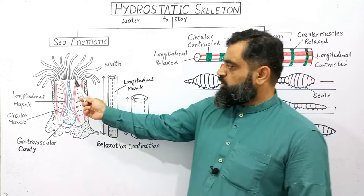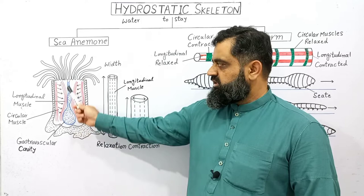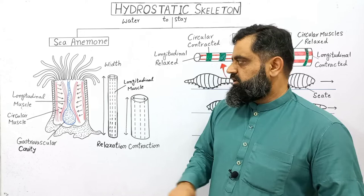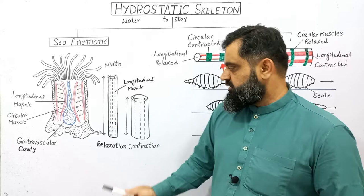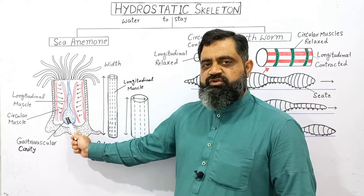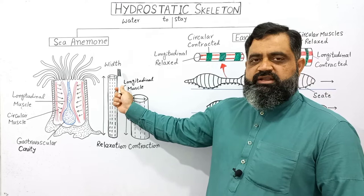When the mouth opens, water enters into the gastrovascular cavity. Then the muscles around the mouth close, the circular muscles contract while the longitudinal muscles relax. Pressure is exerted on the fluid in the gastrovascular cavity and the body becomes elongated — it decreases in width and increases in length.